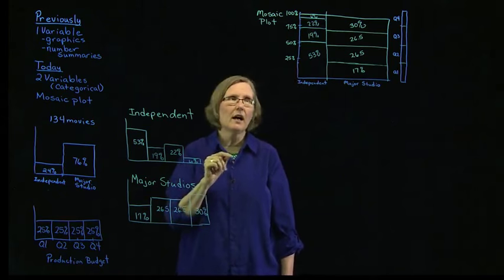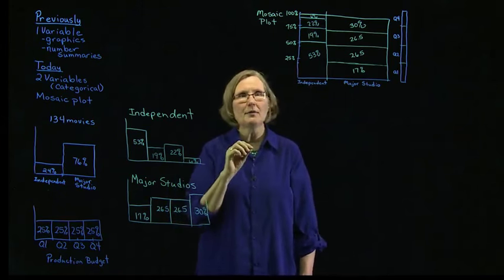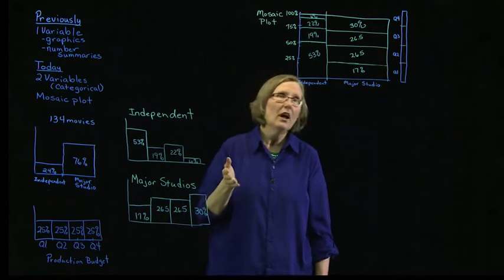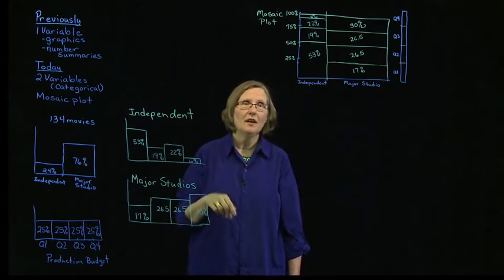What we'll do next time is use the information in our mosaic plot to come up with number summaries comparing two categorical variables called a contingency table. So I'll see you then.